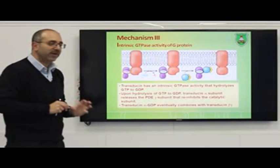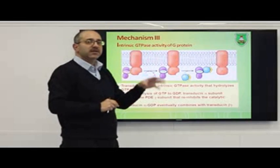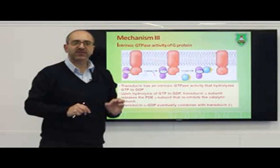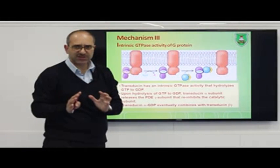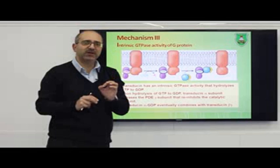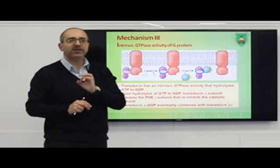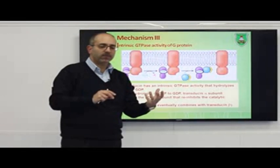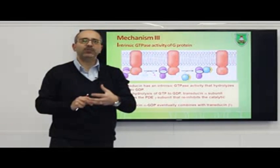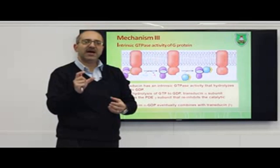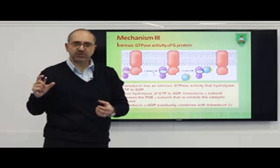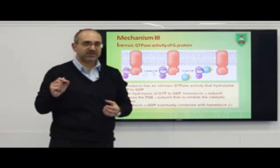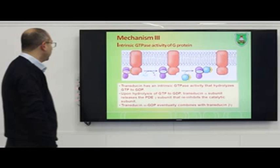Mechanism number three is related to transducin itself. The G-protein has intrinsic GTPase activity — the ability to convert GTP to GDP. When GTP is hydrolyzed to GDP, the alpha subunit reassociates with the beta and gamma subunits, inactivating it. This is an intrinsic activity of the molecule.